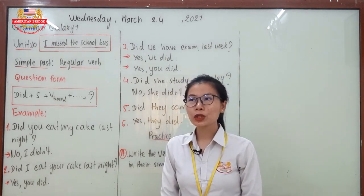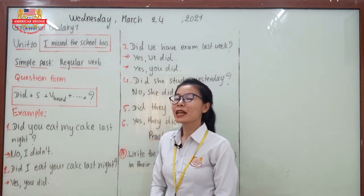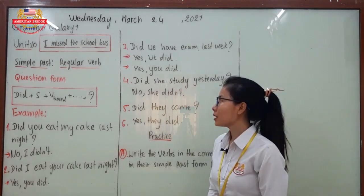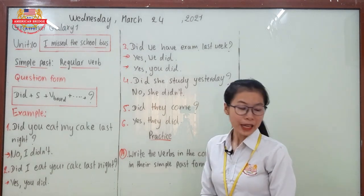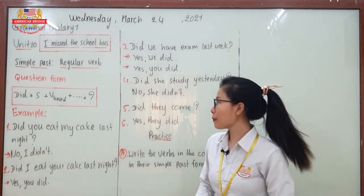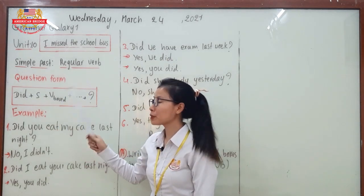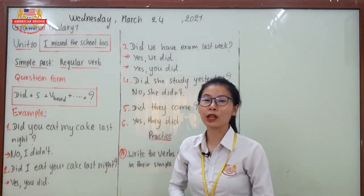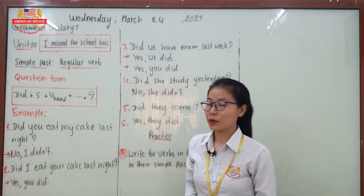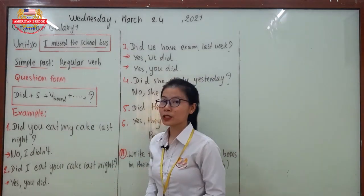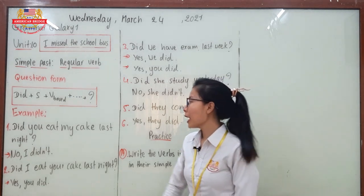Today you are going to learn about simple past again, focusing on the last form: the question form. The question form is: did + subject + verb base + object + question mark. Verb base refers to the verb that never changes form, the original verb — it acts like the infinitive.